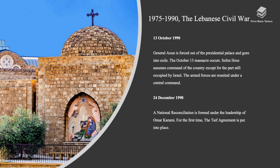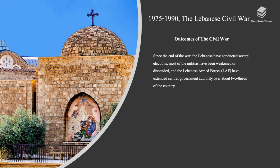Selim Hoss assumed command of the country except for the part still occupied by Israel. The armed forces were reunited under a central command. On December 24th, 1990, a national reconciliation government was formed under the leadership of Omar Karami. For the first time, the Taif Agreement was put into place. Since the end of the war, the Lebanese have conducted several elections. Most of the militias have been weakened or disbanded, and the Lebanese armed forces have extended central government authority over about two-thirds of the country.